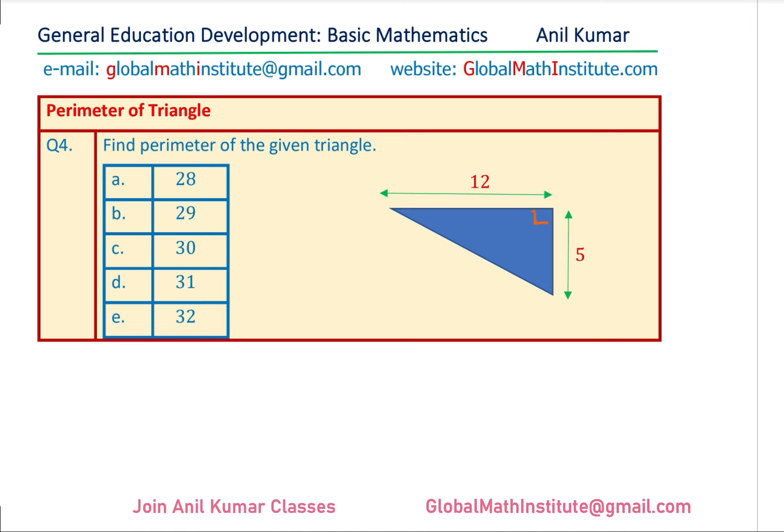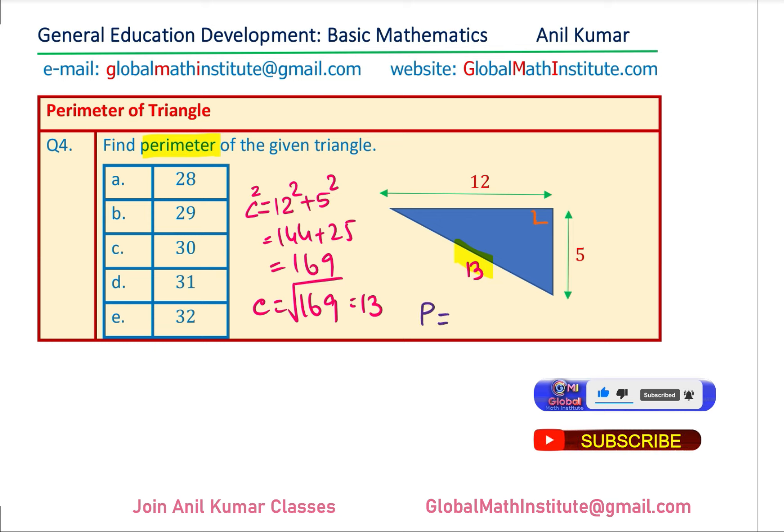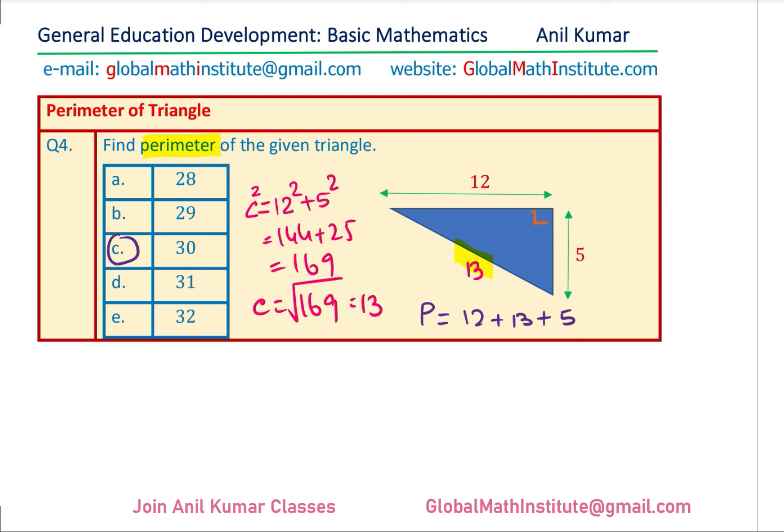The hypotenuse: C² = 12² + 5², which is 144 plus 25, equal to 169. So C equals the square root of 169, which is 13. This is also a Pythagorean triple. The perimeter is 12 plus 13 plus 5. That gives 25 plus 5, which is 30. Option C is the right answer. Remember the Pythagorean triple 5, 12, 13.